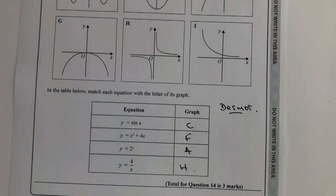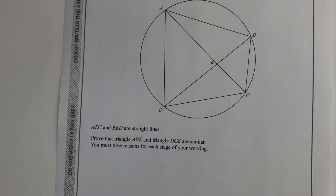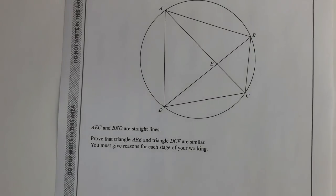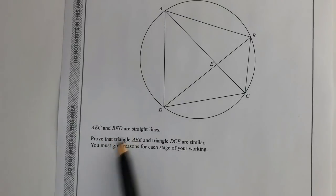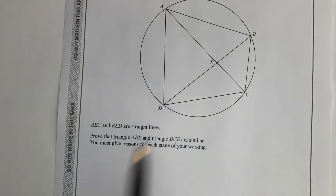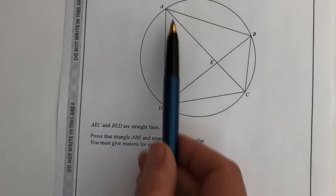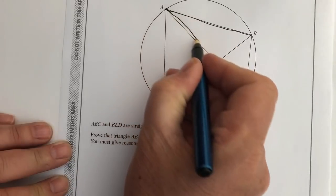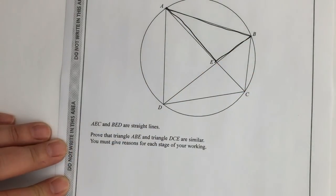Let's move on to question number 15 which deals with proving that triangles are similar. A, B, C and D are four points on the circumference of a circle, and AEC and BED are straight lines. We need to prove that triangle ABE and triangle DCE are similar to each other.